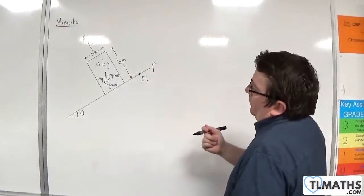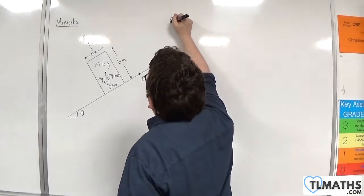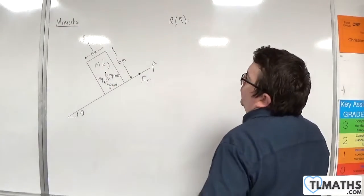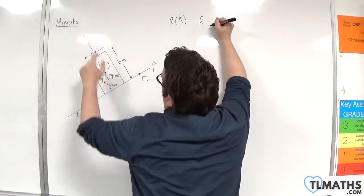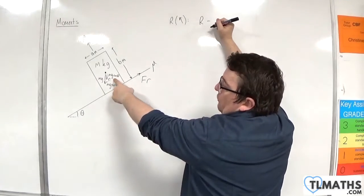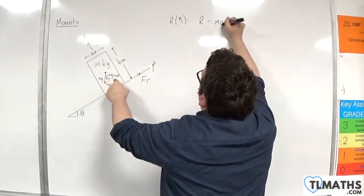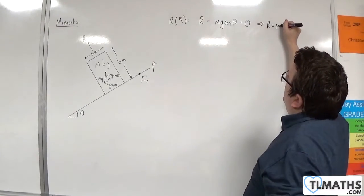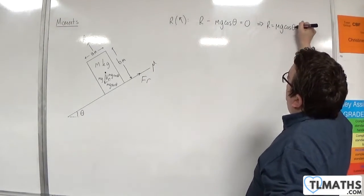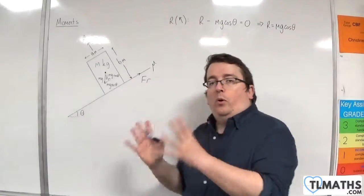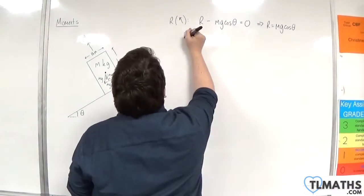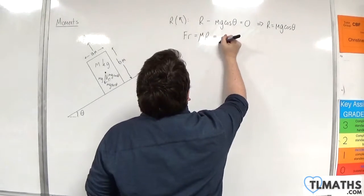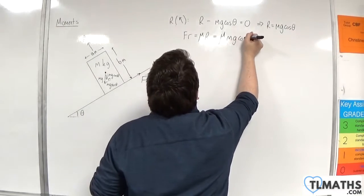So if I resolve forces, let's resolve forces perpendicular to the slope first, taking that direction as positive. We're going to have R take away the perpendicular component of the weight, so mg cosine theta. Now if we're on the point of moving, then we know that the friction is going to be equal to mu times R, so the friction is mu times mg cosine theta.